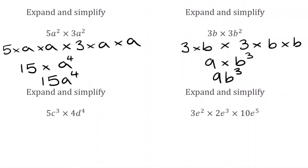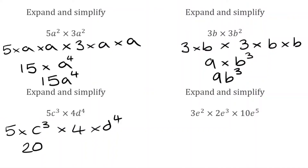For the next question we've got 5c to the power of 3 multiplied by 4d to the power of 4. We've got terms of c in the first part and terms of d in the second, so we can't combine those letter terms together. We have 5 multiplied by c to the power of 3, times 4 multiplied by d to the power of 4. Combining the numbers: 5 multiplied by 4 is 20. The c and d terms stay separate, so the final answer is 20c to the power of 3, d to the power of 4.